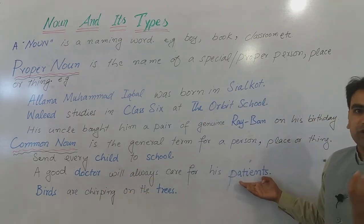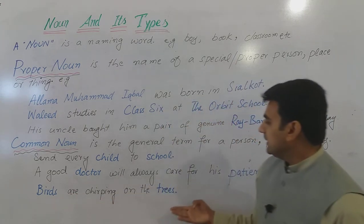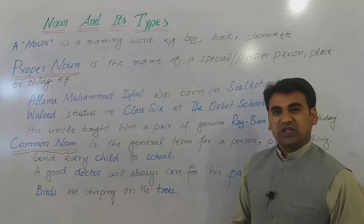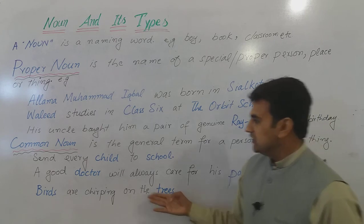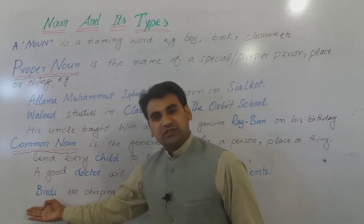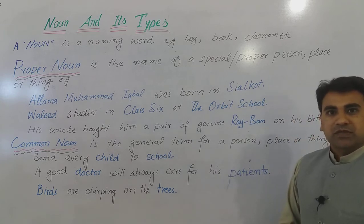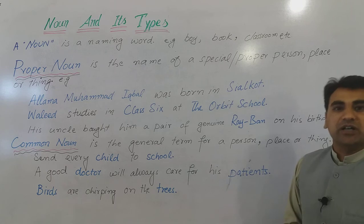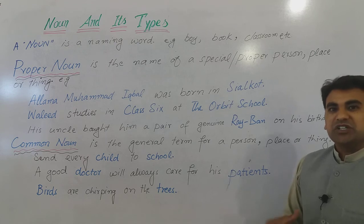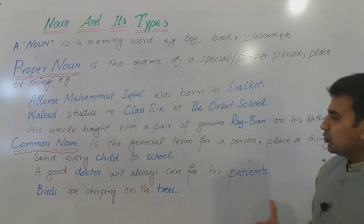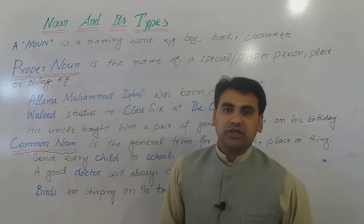ایک اچھا doctor چاہے کوئی بھی مریض اس کے پاس آ جائے، وہ اس کا خیال رکھے گا۔ 'Birds are chirping on the trees.' Which trees? We have not mentioned it. Which birds? We have not mentioned it either. There is no specification of the type of birds or trees — کوئی خصوصیت نہیں ہے۔ That is why 'trees' and 'birds' are common nouns.